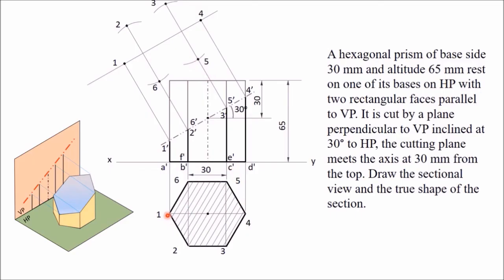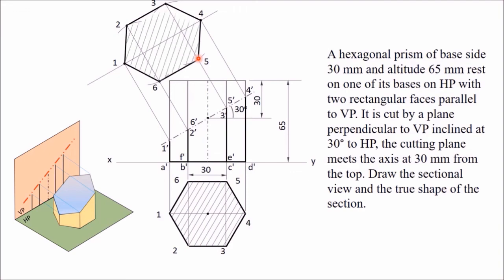Now join all these points in sequence: 1, 2, 3, 4, 5, 6. This is the true shape of the section. To show this as a section, draw hatching lines or section lines which are thin lines. The angle can be somewhat different — you can take any angle; it is not necessary to draw at 45 degrees, but these lines should not be vertical or horizontal. In this way, you got the true shape of the section. This is what you need to draw in this particular problem.